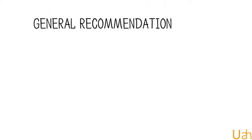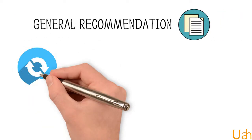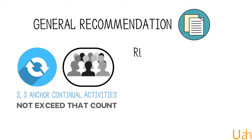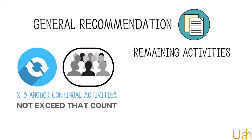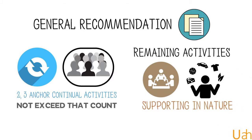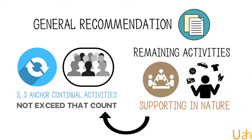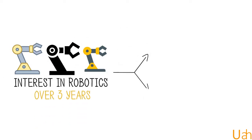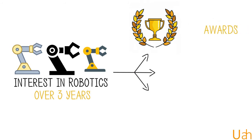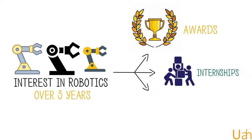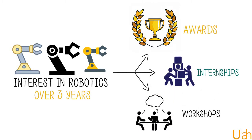Our general recommendation based on typically successful applications is to focus on two to three anchor continual activities and not exceed that count. Remaining activities tend to be burst activities like internships, hobbies, etc., which can also be supporting in nature and supplement a continual activity. For instance, an interest in robotics over three years can be supplemented by national or international awards, an internship in a robotics company, or a short workshop in the same field.